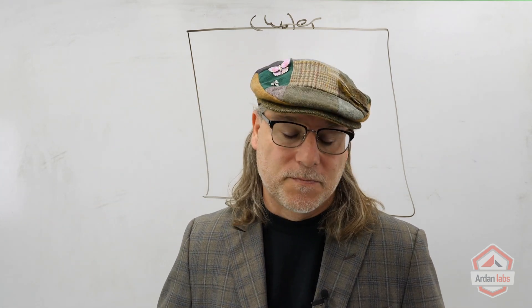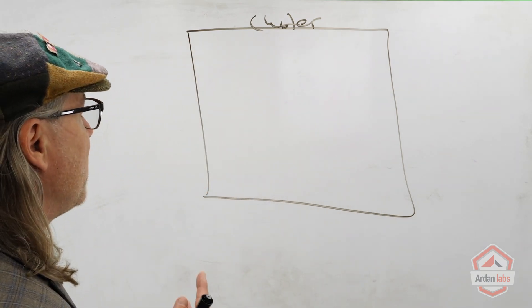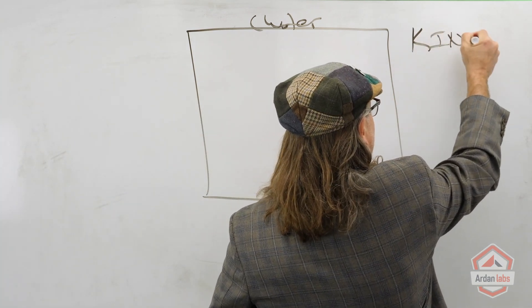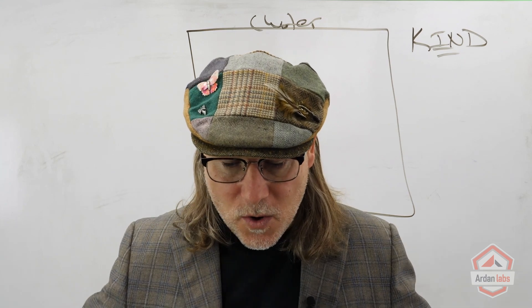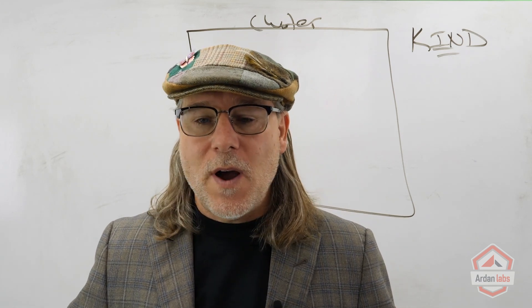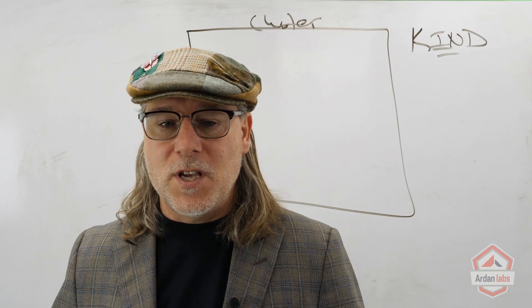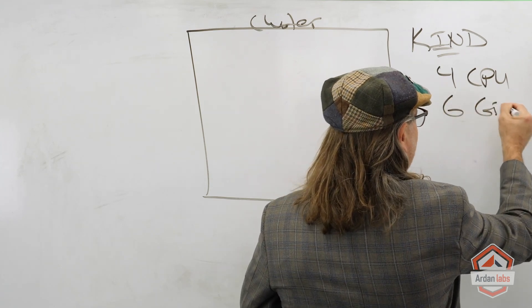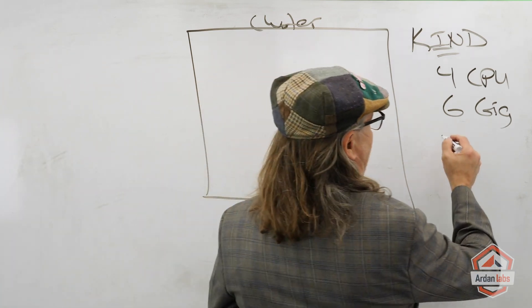In our particular case, when we create this cluster on our local machine using Kind (Kubernetes in Docker), we're really just going to be configuring a single node of compute power which is going to be coming from Docker itself. However you've configured Docker - I've configured Docker to have four CPUs and six gigs of memory - Docker is essentially going to represent the machine we're running on and the node itself.